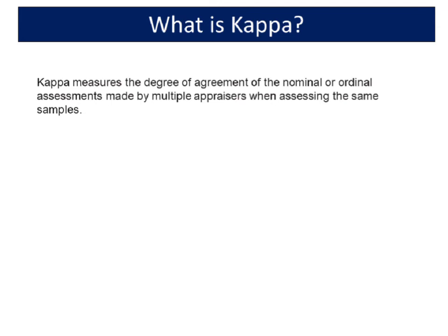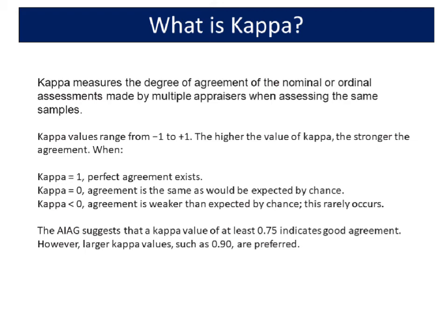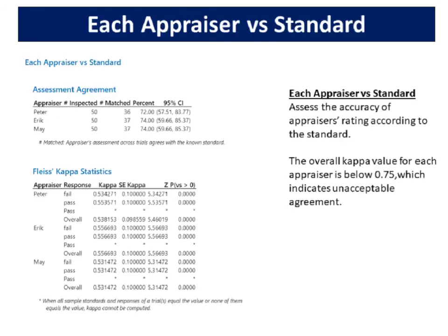What is kappa? Kappa measures the degree of agreement of the nominal or ordinal assessments made by multiple appraisers when assessing the same samples. Kappa values range from minus 1 to plus 1. The higher the value of kappa, the stronger the agreement. When kappa equals 1, perfect agreement exists. When kappa equals 0, agreement is the same as would be expected by chance. Kappa less than 0 means agreement is weaker than expected by chance — this rarely occurs. The AIAG suggests that a kappa value of at least 0.75 indicates good agreement; however, larger kappa values such as 0.90 are preferred. Each appraiser versus standard assesses the accuracy of appraiser's rating according to the standard. The overall kappa value for each appraiser is below 0.75, which indicates unacceptable agreement.